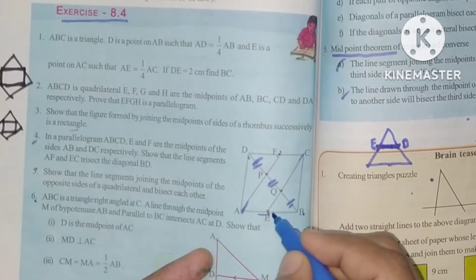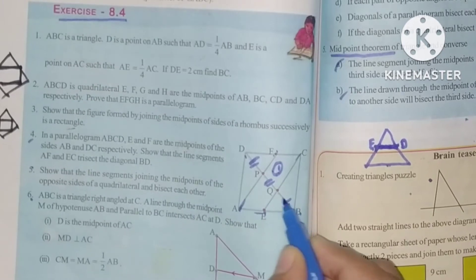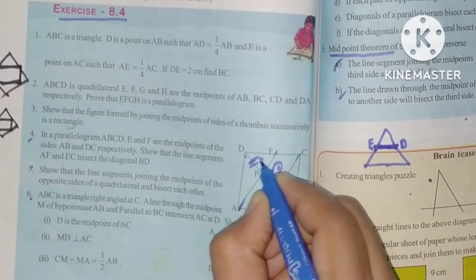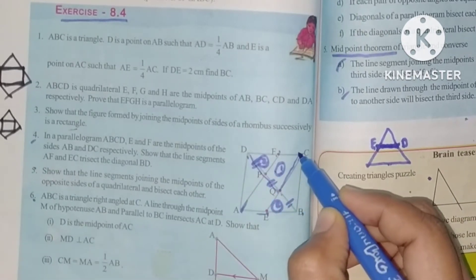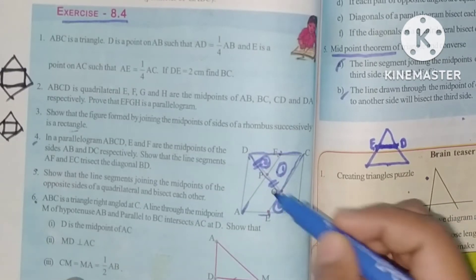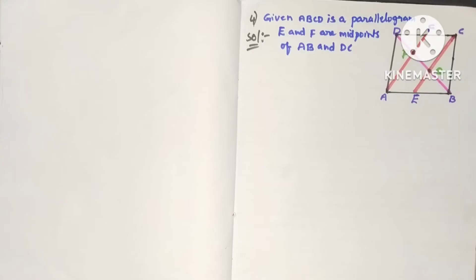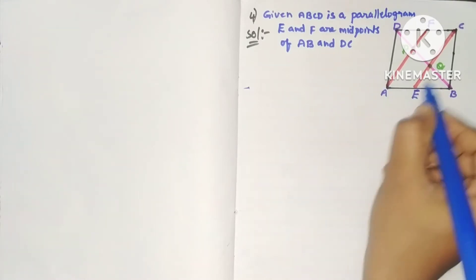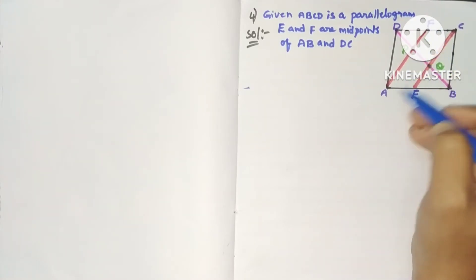We divide this problem into three parts. First, we prove that AECF is a parallelogram. Second, we compare triangles to show certain segments are equal. Third, we use triangle DQC and triangle APB to complete the proof.